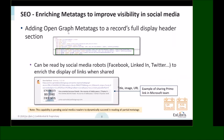Open Graph meta tags are the standard that allows shared links to be displayed with an image, title, and description. We added OG title, OG description, OG image, and OG type to the header section of each Primo full display page, so they can be read by crawlers for Twitter, LinkedIn, and Facebook.